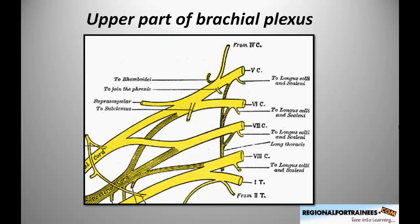Now let's have a closer look at the upper part of the brachial plexus. We can see the five nerve roots — C5, C6, C7, C8, and T1. Of interest, certain branches of the brachial plexus originate from above the clavicle, while most originate from below. These supraclavicular branches include two from the roots and two from the trunks.